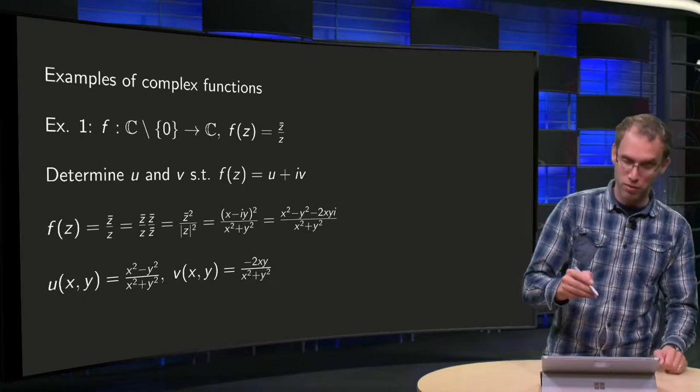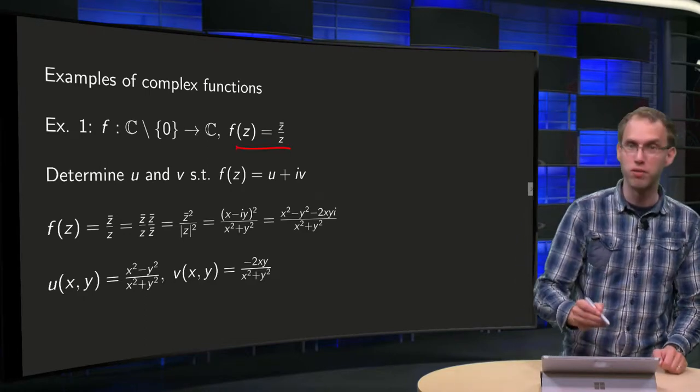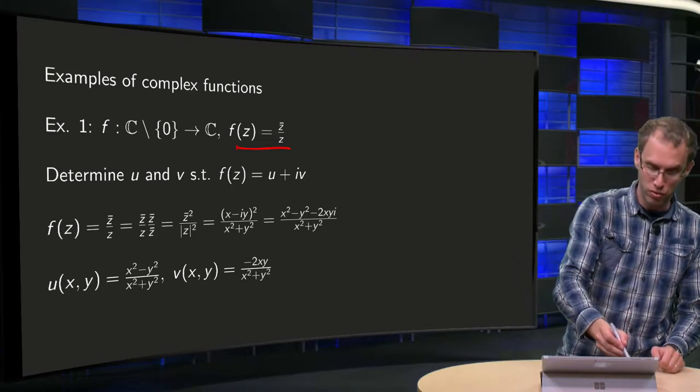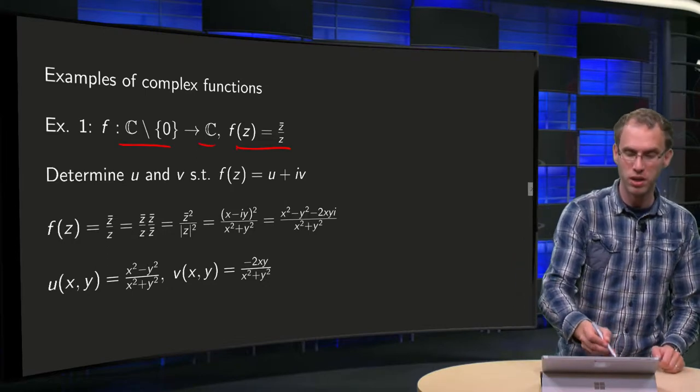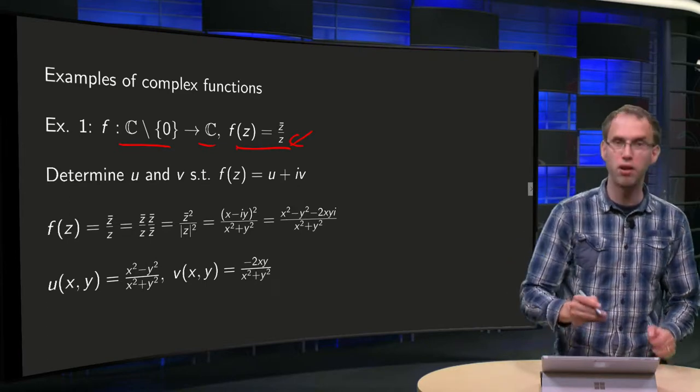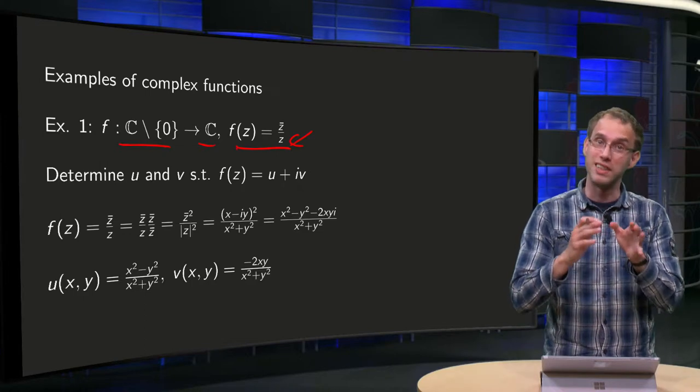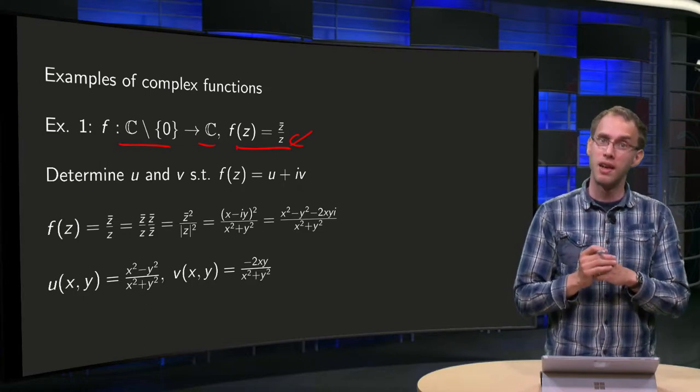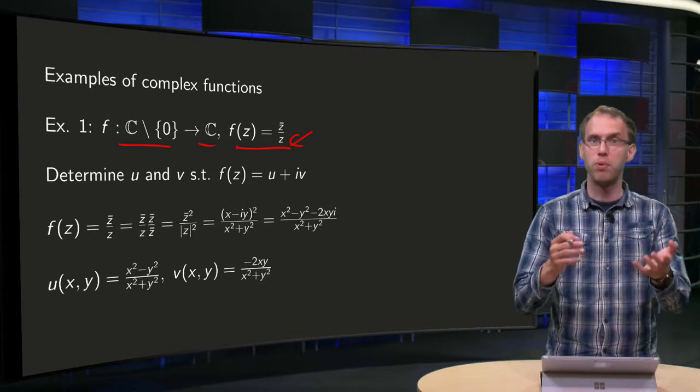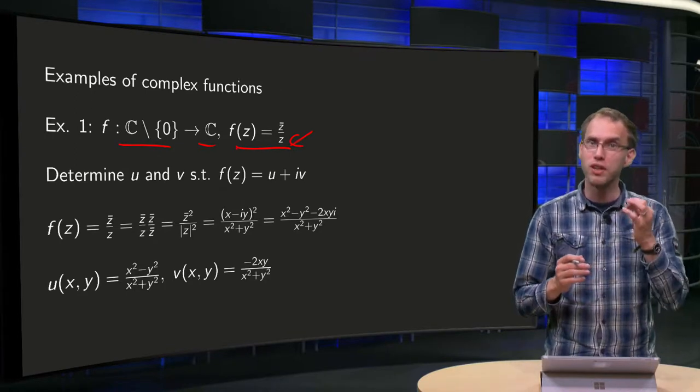Let's start with the function f equals 1 over z̄ and we want to find u and v. This function goes from ℂ without zero to ℂ. You cannot plug in zero of course because then you are dividing by zero, so our domain will be all of ℂ with the exception of zero. Let's try to find u and v. What should we do? We can just plug it in mindlessly, but we can also think of it first.